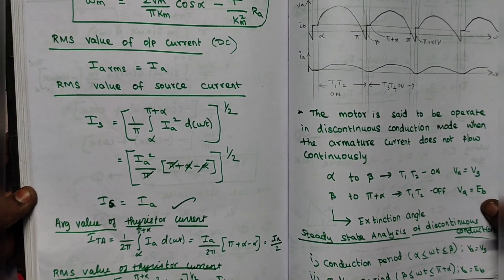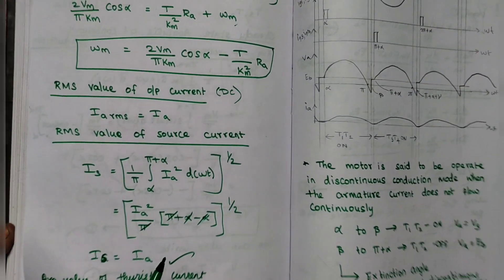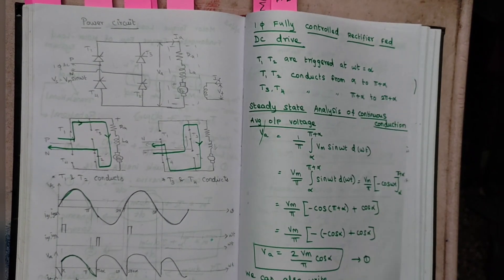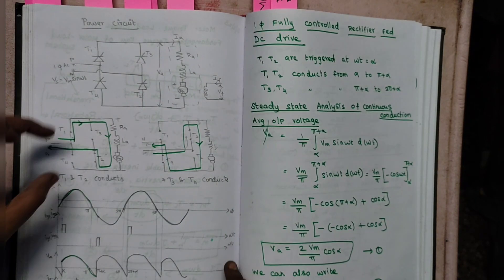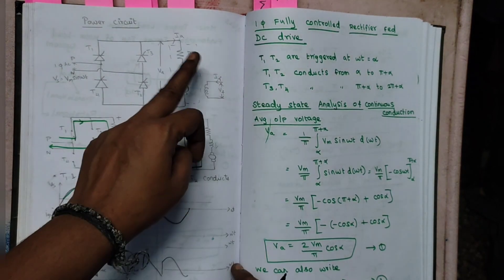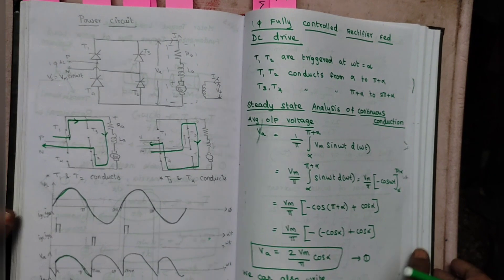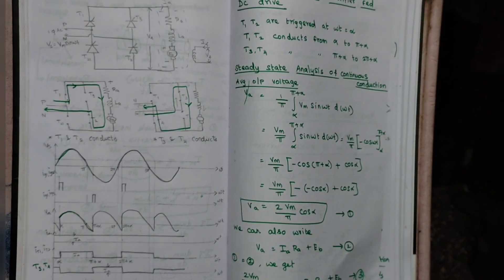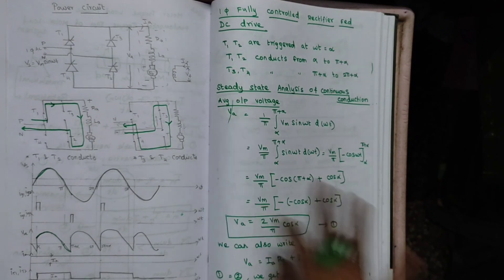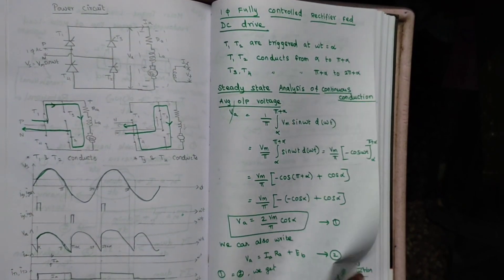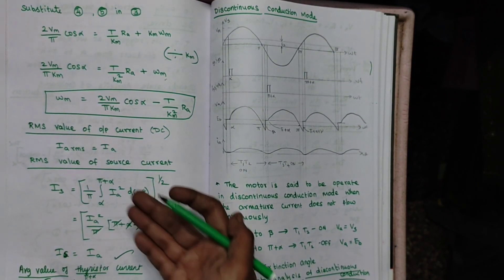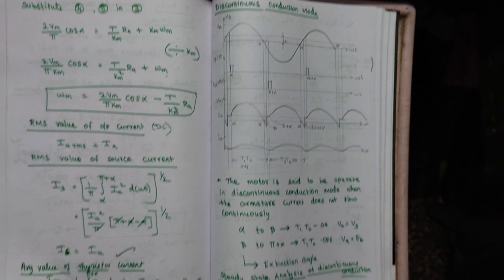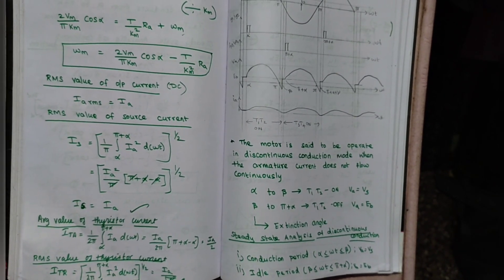That is all about continuous conduction. For the exam, you want to write the power circuit diagram, show T1 and T2 conducting for the positive half cycle and T3 and T4 for the negative half cycle, draw the waveforms, and then write the derivations. The key results are: average output voltage Va = (2·Vm/π)·cos(α), the speed equation ωM, RMS output current Ia, RMS source current Ia, average thyristor current Ia/2, and RMS thyristor current Ia/√2.